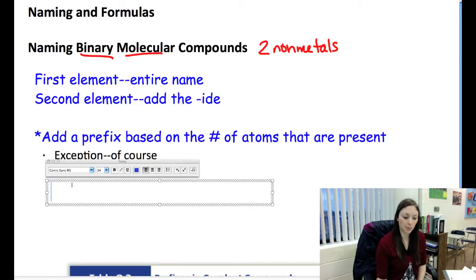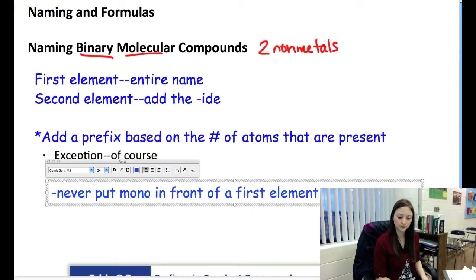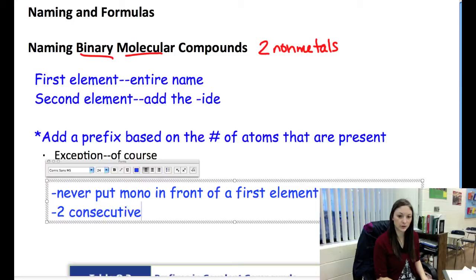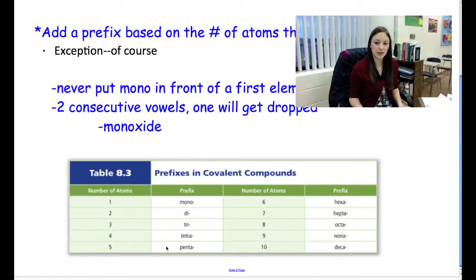The exception here that you've got to watch out for: you never put mono in front of a first element. And if you have two consecutive vowels, one will get dropped. You don't want to put mono-oxide, that just looks weird. So they drop one of them. It'll just be monoxide. These prefixes that we're talking about here are in the chart that you have to your right. One is mono, two is di, tri, tetra, penta, hexa, and so forth. All of these prefixes are on the back of your periodic table.